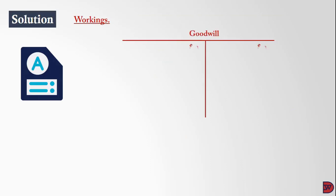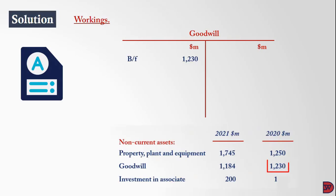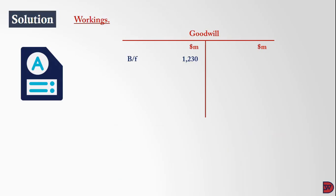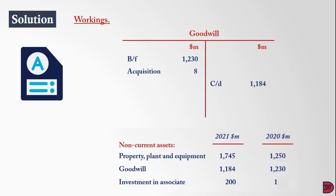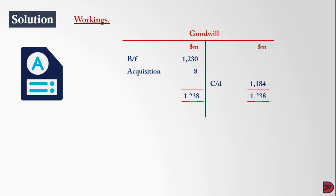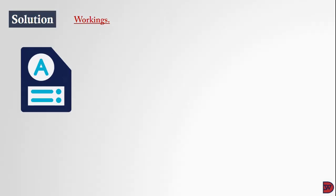For the workings, we start with goodwill. Goodwill is an asset with a debit balance. The opening figure was 1 billion 230 million dollars. The acquisition of Fred added 8 million dollars of goodwill, giving a subtotal of 1 billion 238 million. Comparing to the closing balance of 1 billion 184 million dollars, we get an impairment of 54 million dollars.